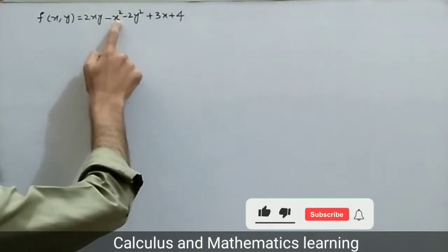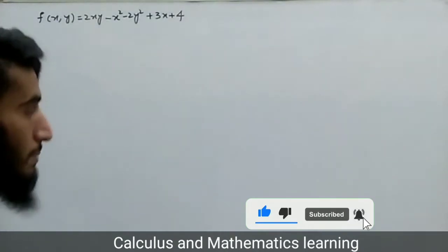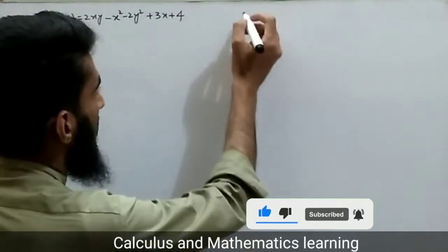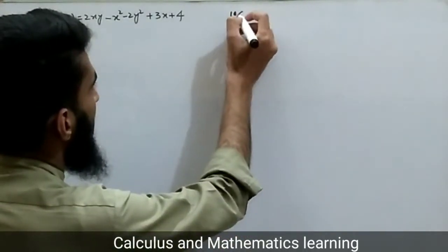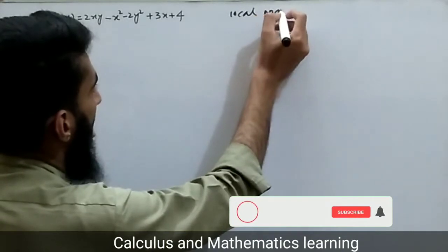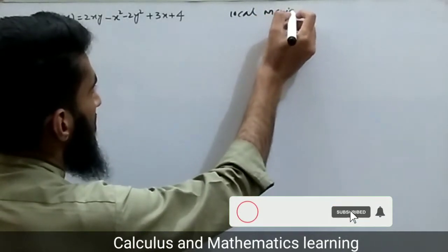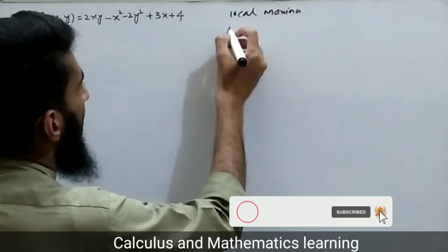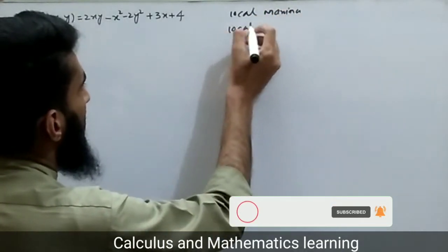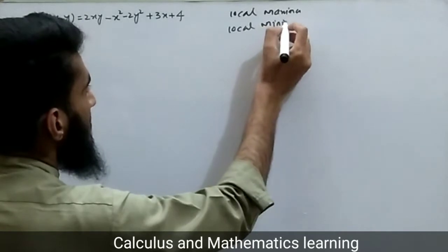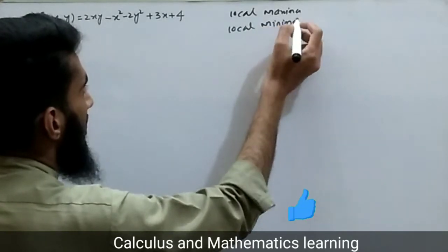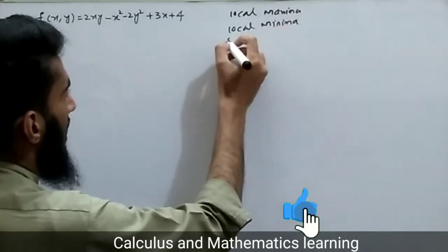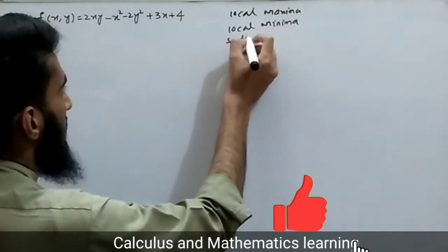...two times xy minus x squared minus two y squared plus three x plus four. First we will find local maxima, then we will find local minima, and at last we will find saddle points.